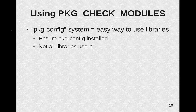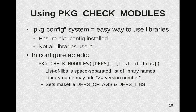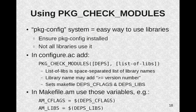Now let's say you want to use some libraries. The pkg-config system is the easy way to use libraries. First of all, you need to make sure that pkg-config is installed. Sadly, not all libraries use pkg-config, but a lot do. In the case where you do want to use a library that uses pkg-config, simply add to your configure.ac file: PKG_CHECK_MODULES, a prefix (like 'deps'), and the list of libs — a space-separated list of library names. You can include >= version number if you want to be specific. This sets deps_CFLAGS and deps_LIBS. In your makefile.am, use these variables: AM_CFLAGS equals deps_CFLAGS and AM_LIBS equals deps_LIBS, and you set your list of libs to all the libraries you depend on — that's all you need to do.